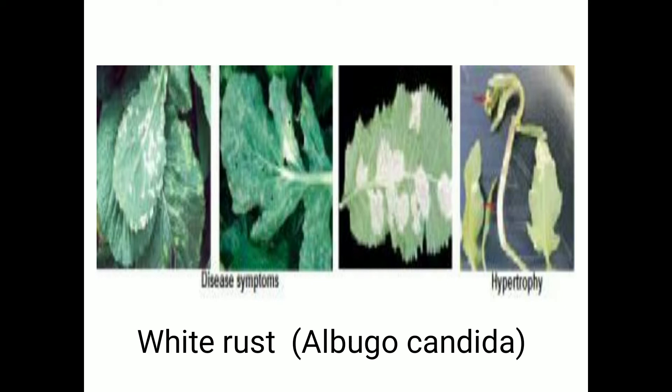The next disease is white rust, one of the most important and typical diseases observed in cruciferous crops, mostly mustard. White rust is caused by the fungus Albugo candida. There are two types of symptoms: local symptoms and systemic symptoms.